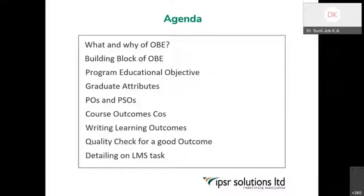So today we will have the basic structure — what is the magic formula for writing the learning outcome — and also we will be having a quality check of a good outcome. I'll be giving you four criteria.